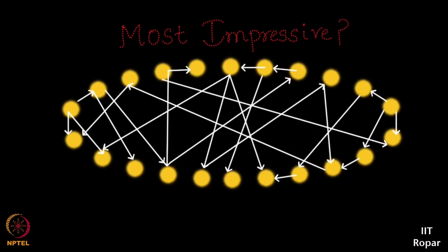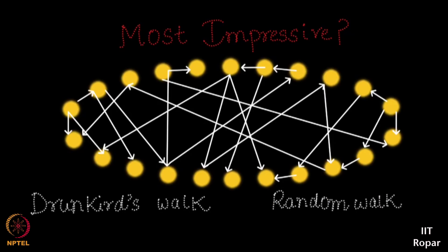Here goes my algorithm, my technique. What I will do is on this graph — the network you are seeing — I will start from some node and take what is called a drunkard's walk, also called the random walk. You start from a node, let's say this node. You have so many lines going from this node. I am going to jump to one of the lines and land at the other end of that line — I will pick one of them randomly and jump there.